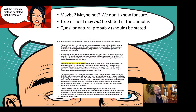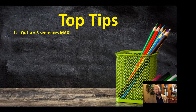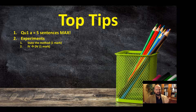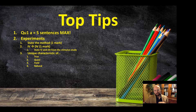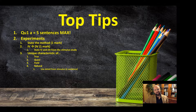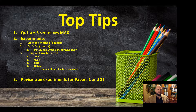Quick recap of top tips for question 1a: keep it to five sentences maximum, and use bullet points if you like. If the stimulus uses an experiment, state the method, state that it has an IV and a DV regardless of experiment type — note that interviews, observations, case studies, and correlational studies do not have IVs and DVs, only experiments do. Then give the unique characteristic of whichever experiment type it was. One sentence of detail from the stimulus is fine just to match the definition.